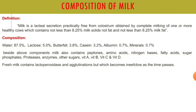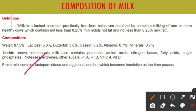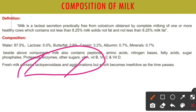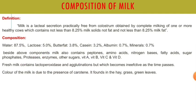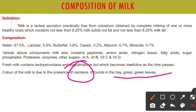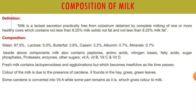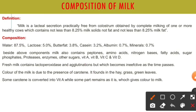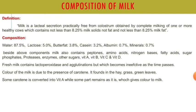Fresh milk contains lacto-peroxidase and agglutinase, but when the milk becomes colder these two components become ineffective. The color of milk is white because of carotene present in hay, grass, and green leaves. Some carotene is converted into vitamin A while some part remains as it is, which gives color to the milk.